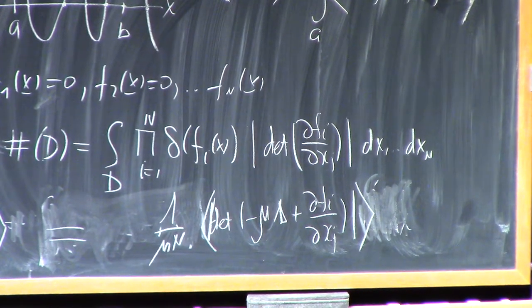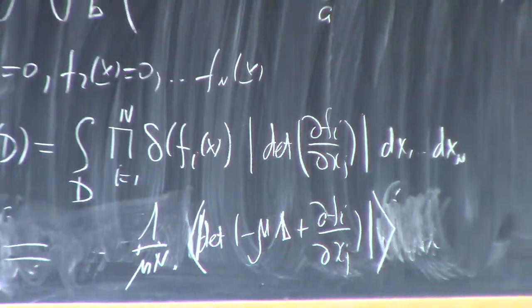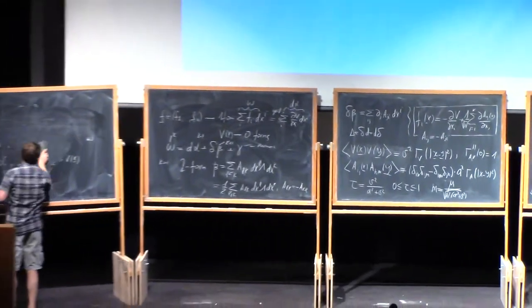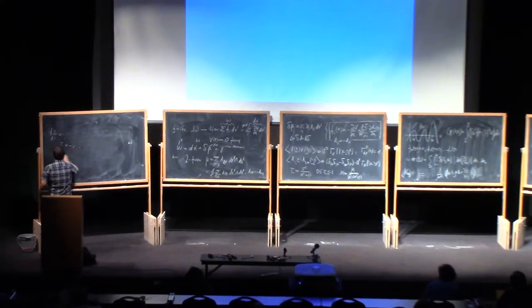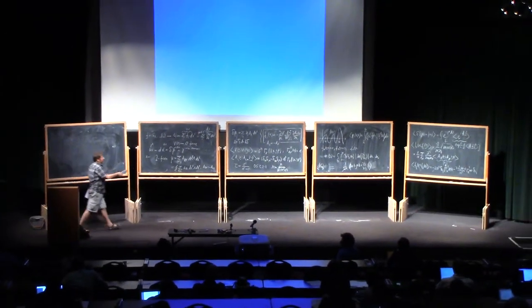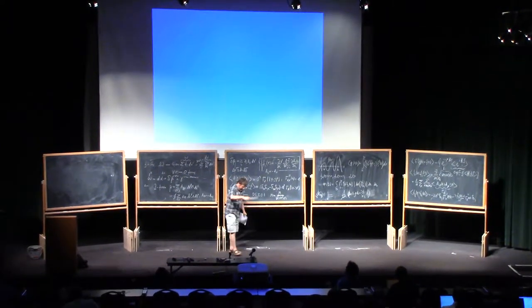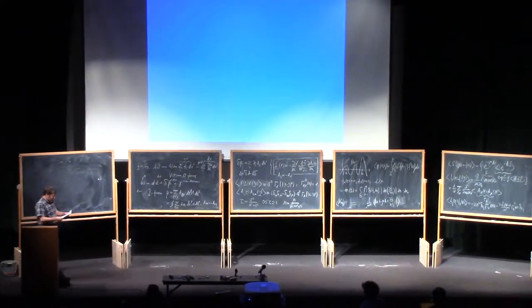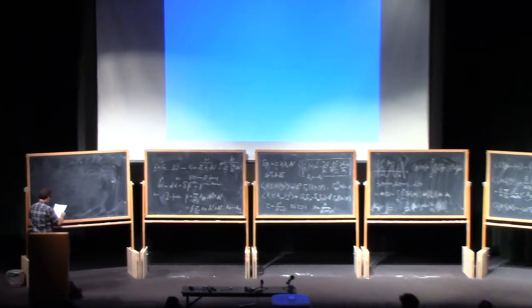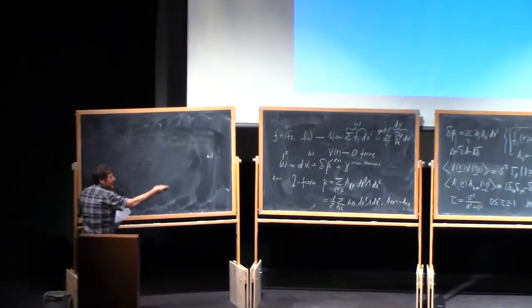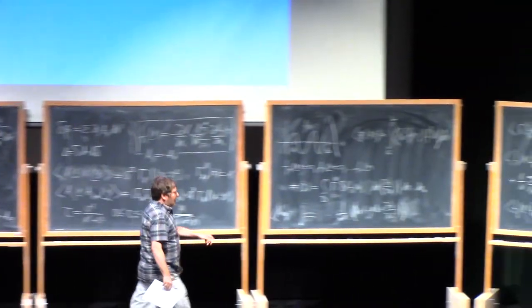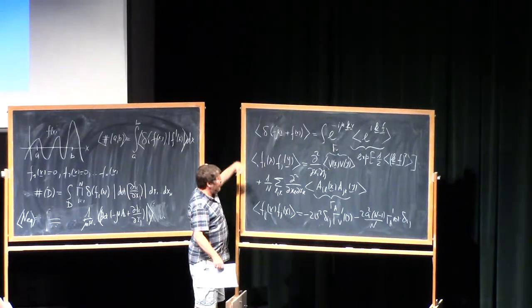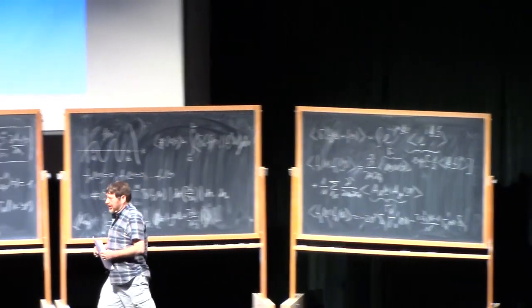Next step is to understand what are the properties of this random matrix, this Jacobian matrix. In the remaining time of this lecture, I'll just briefly discuss what is this matrix. Really, the assumptions of homogeneity and rotational invariance, isotropy, will result in a very nice structure of the corresponding Jacobian.